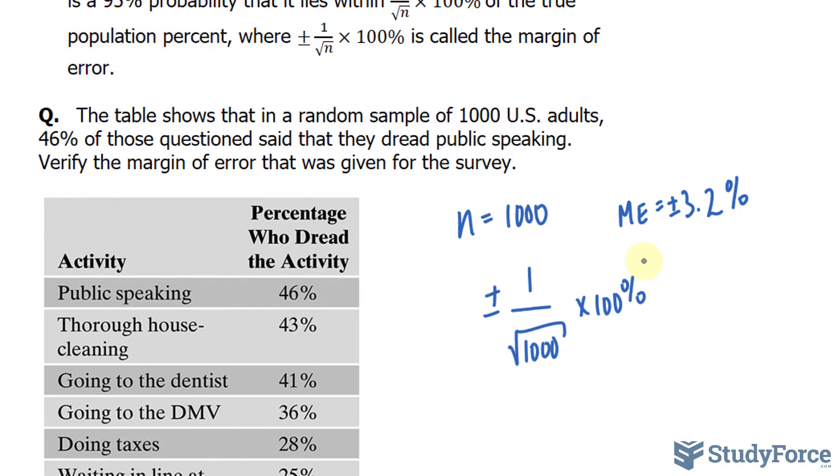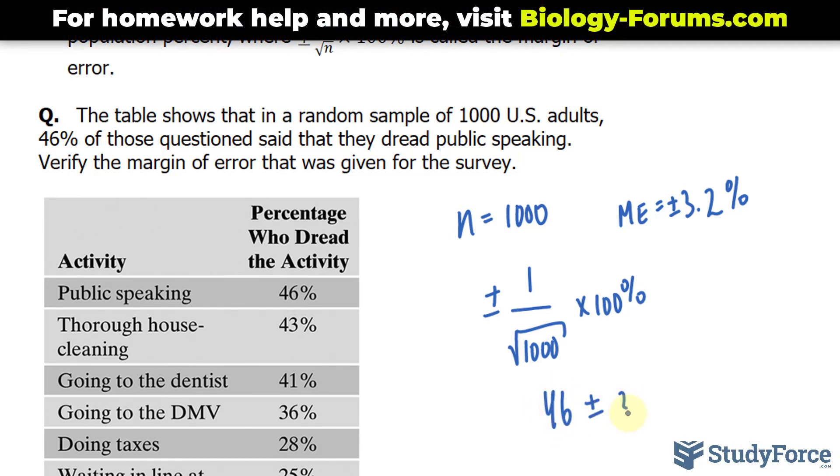We can say that there's a 95% probability that the true population percentage lies between 46 plus minus 3.2%.